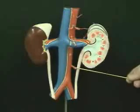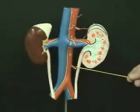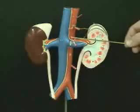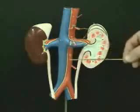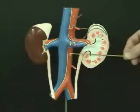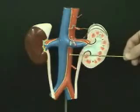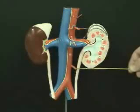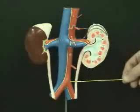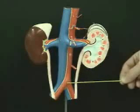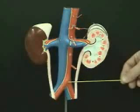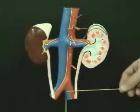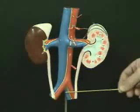So to summarize: T12 is the celiac trunk, L1 is the superior mesenteric artery and renal arteries. There is something happening at L2 but we do not see it on this model. L3 is the inferior mesenteric artery. At L4, the abdominal aorta bifurcates into the left and right common iliac arteries.